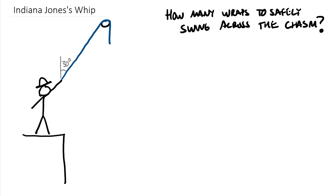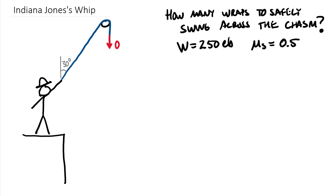We're zoomed in on that root with his whip acting as a flexible belt wrapped over the top. We have a 30-degree angle between vertical and the direction of his whip. The question is: how many wraps of his whip does he need to safely swing across the chasm?